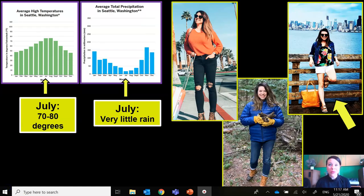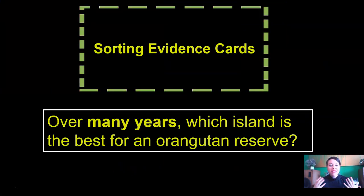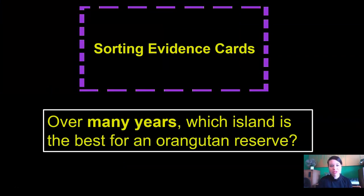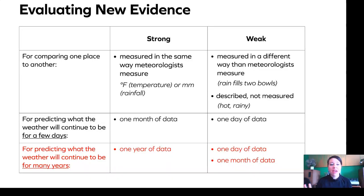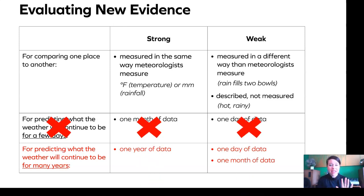Do you remember part one of this lesson? We found our birthdays on the average temperature and average precipitation graphs for Seattle and decided what we would wear on an upcoming birthday. In this part of the lesson, we're going to be sorting evidence cards. We're trying to answer the question: over many years, which island is the best for an Orangutan Reserve? We decided that when we evaluate new evidence, we need to be looking for one year of data, not just one day or one month. So if we're actually going to look at what the climate of these islands are, we need to be aware of what the temperature and precipitation are like throughout the entire year.